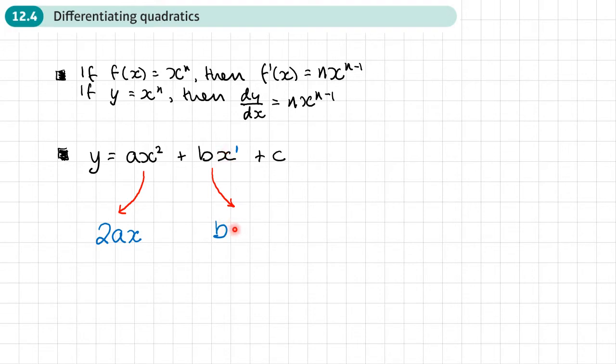Or one. So actually, all we're left with here is just b. And then if we look at the last term, this is the same as c x to the power zero.